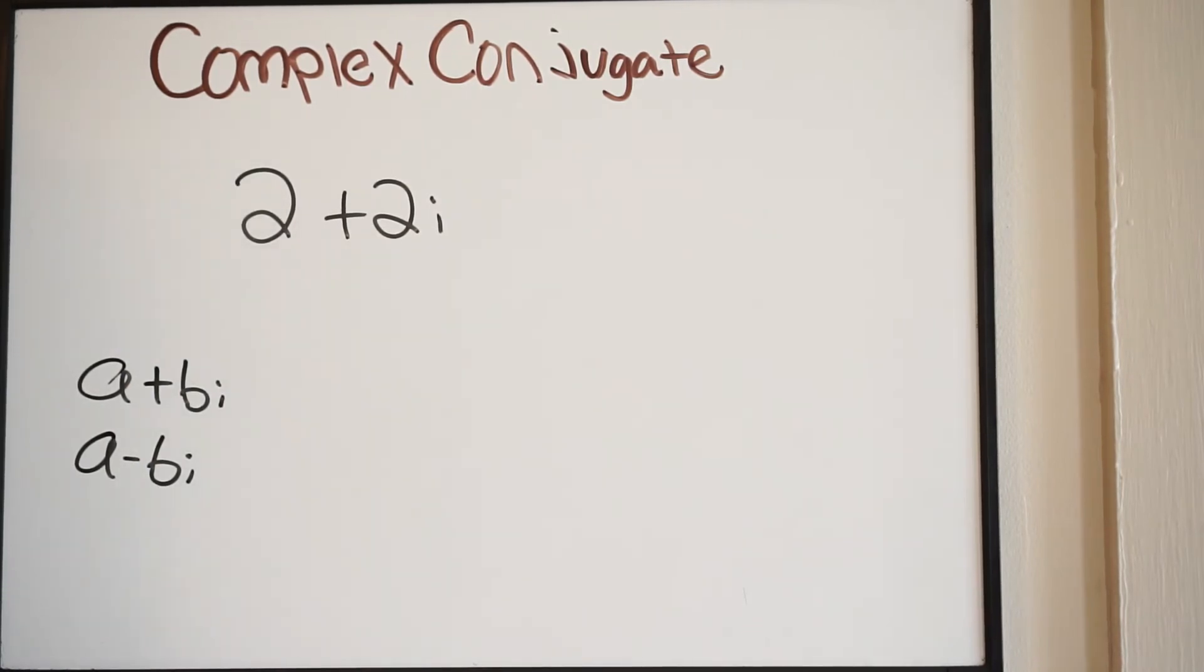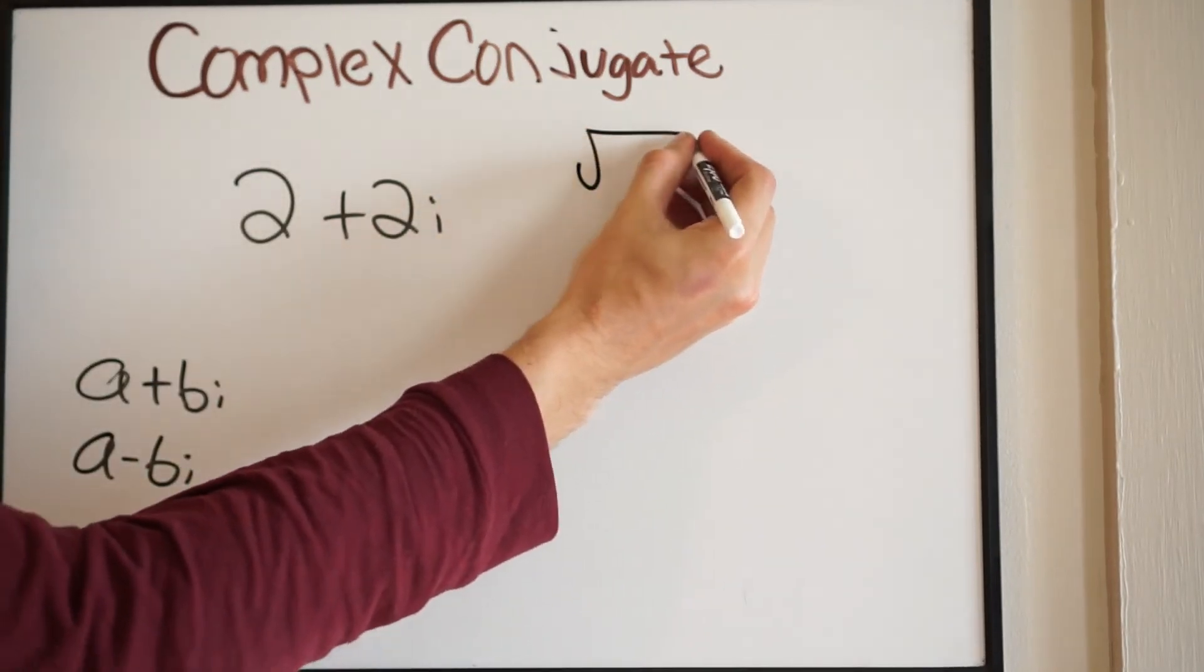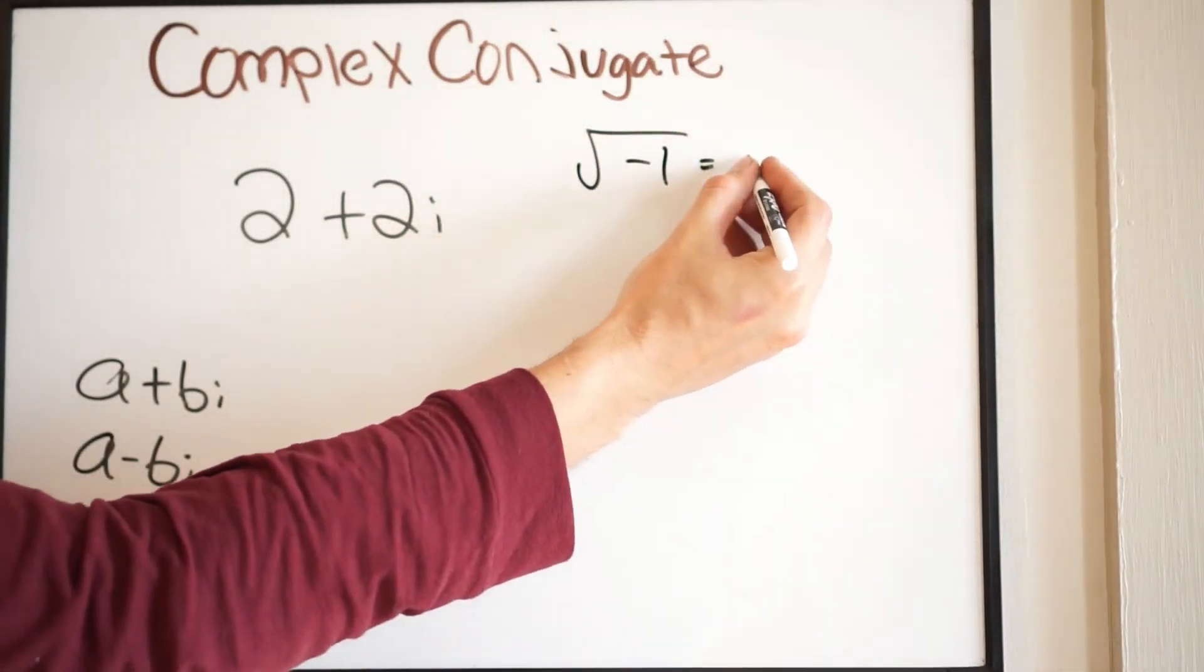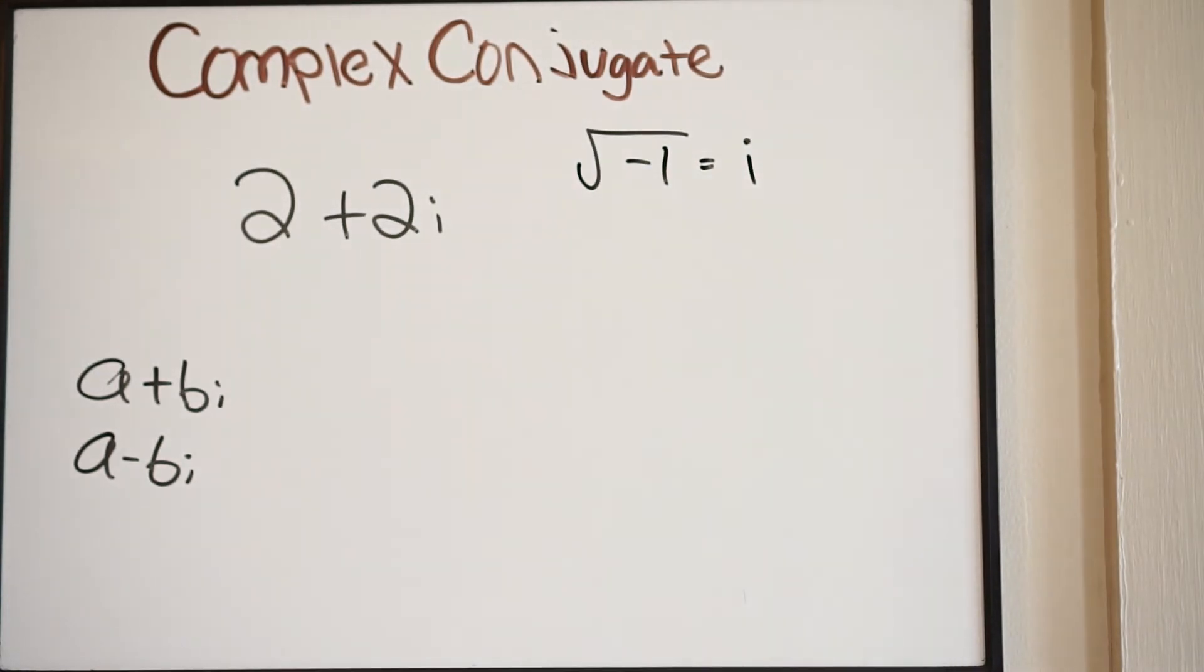So what the complex conjugate is, is simply going to be the opposite. So what I mean by that is the following. Since we're dealing with an imaginary part here, we know that this came from the square root of a negative number. So for example, we know that the square root of negative 1 is i. So again, you can see the i there. So this must have came from the square root of a negative number.